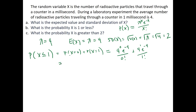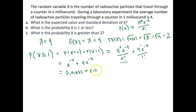Just as a heads up, zero factorial equals one, so you're not dividing by zero. This simplifies to e^(−4) plus four times e^(−4), which equals 0.01832 plus 0.07326, for a total of 0.09158. So the likelihood that one or fewer particles go through the counter is approximately 0.09158.